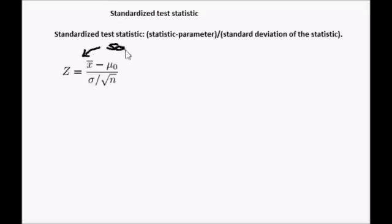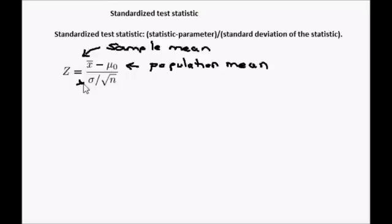So x bar is our sample mean, mu of 0 is the population mean, sigma is our standard deviation, and n is our sample size.